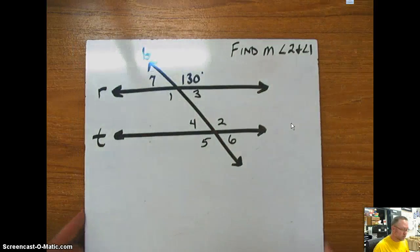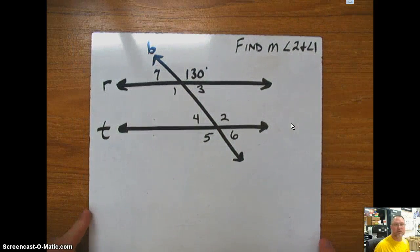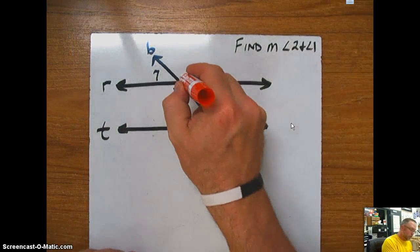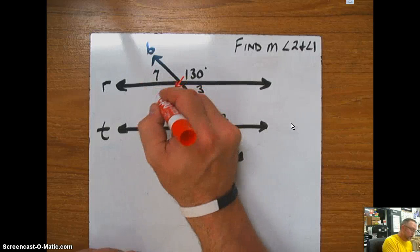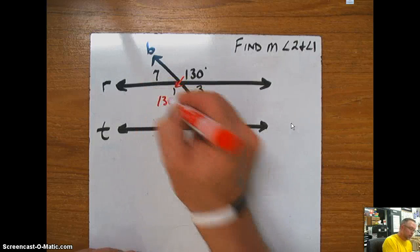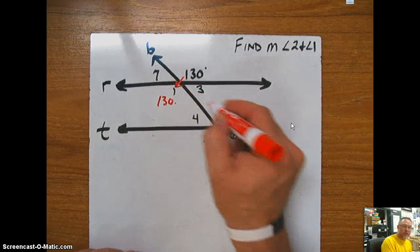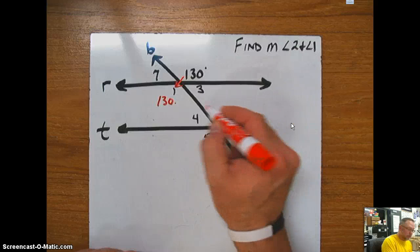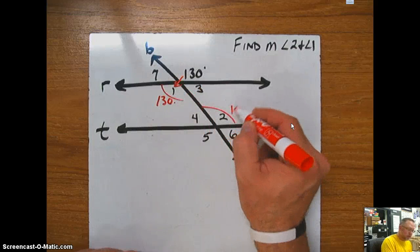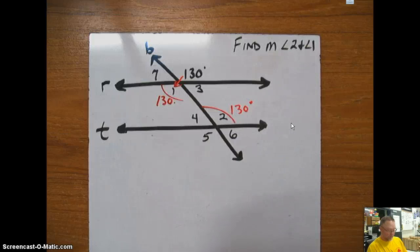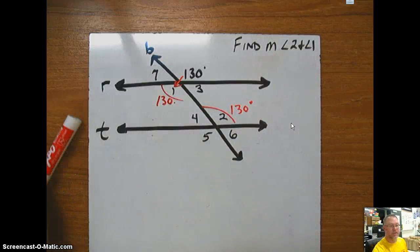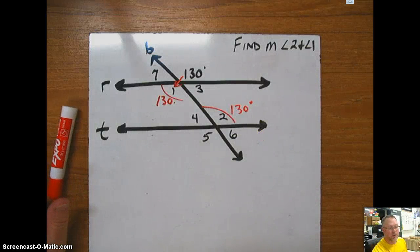The last one is probably the easiest — we're looking for angles 1 and 2. We know angle 1 is vertical to the one we know, which is 130. We also know that these are alternate interiors, so this angle is also 130 degrees. That's your parallels with transversals — get to work.